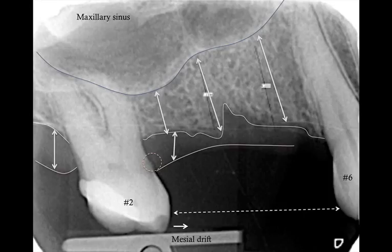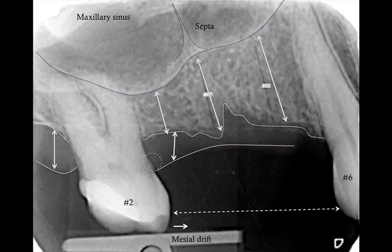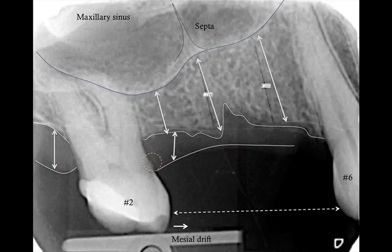I'm also looking at an area right in the middle of the ridge that could be a septa — basically a divider inside the sinus. It can progress from lateral to medial, all the way to the medial wall of the sinus, and that is a source of complications especially when you do a direct sinus lift. If you fail to recognize it, that could potentially lead to perforation of the membrane and other problems. We can definitely confirm this on a CT scan.